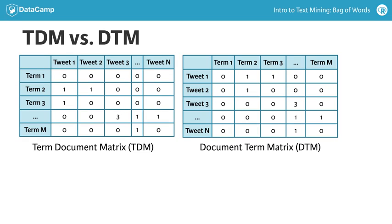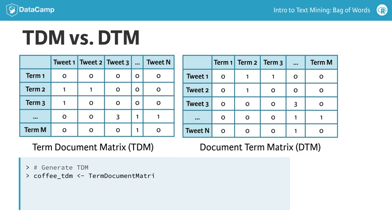The term document matrix has each corpus word represented as a row, with documents as columns. In this example, you simply use the term document matrix function on a corpus to create a TDM. The document term matrix is the transposition of the TDM, so each document is a row and each word is a column.